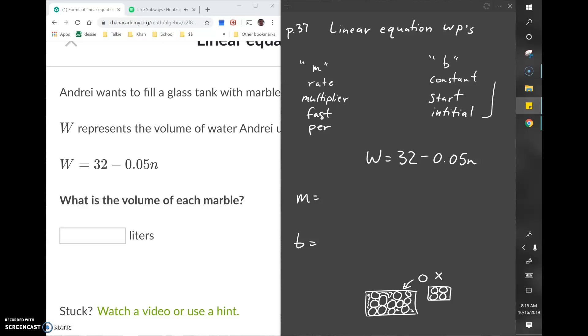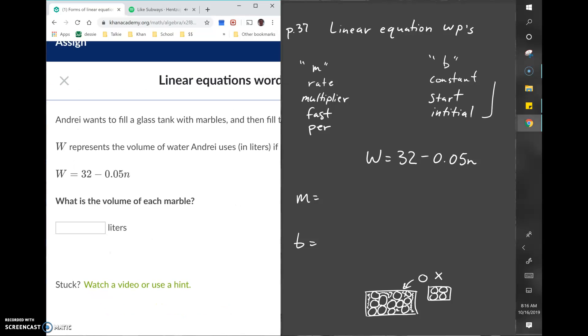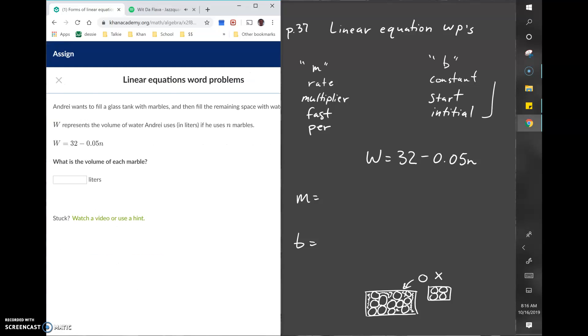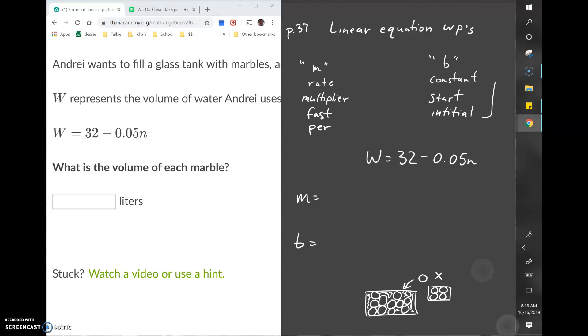Each time he puts in a marble, there's less space. In the equation, the M value is the number that's getting multiplied. M is a rate, and rates are multipliers. The number getting multiplied to the variable n represents M.